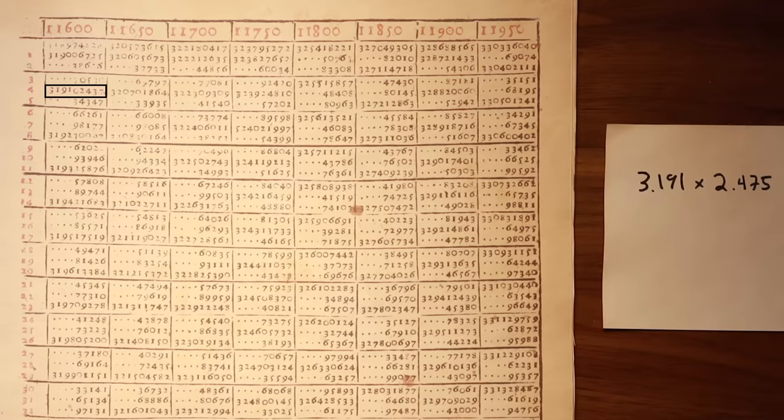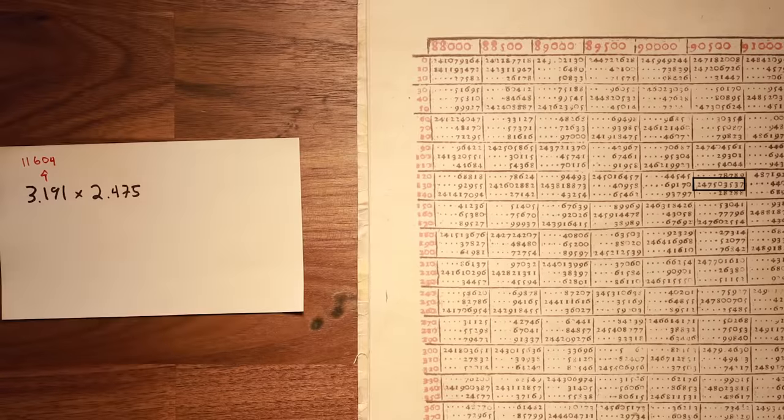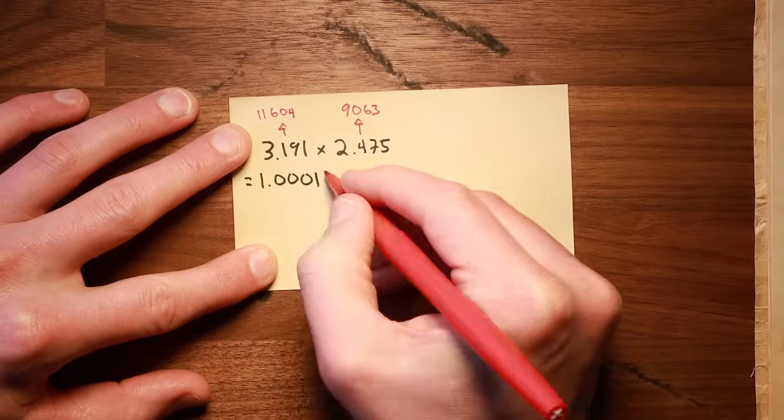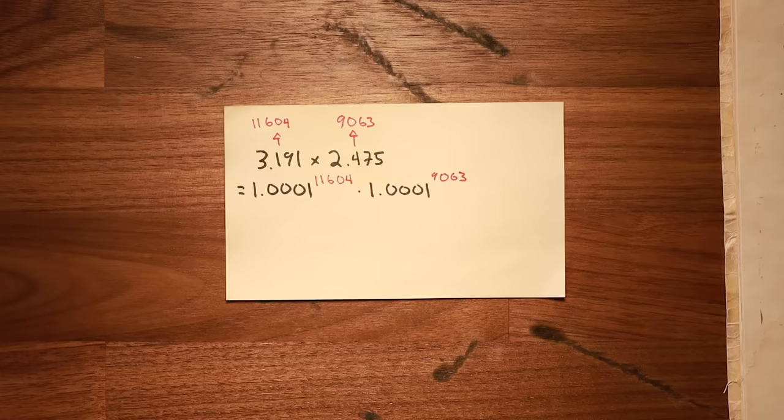3.191 maps to the red number 11604 and 2.475 maps to 9063. We can now rewrite our multiplication problem as 1.0001 to the power of 11604 times 1.0001 to the power of 9063.